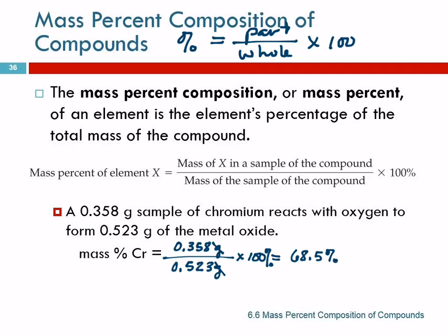Let's think about it and see — does it make sense? Is it reasonable? Well, 0.358 is more than half of the whole thing, isn't it? Half of 0.523 would be about 0.25 or so — that's less than 0.358. This is more than half of it, so our percentage should be more than 50%. If you use the percent button on your calculator, you're going to come up with 0.685% — which is clearly wrong.